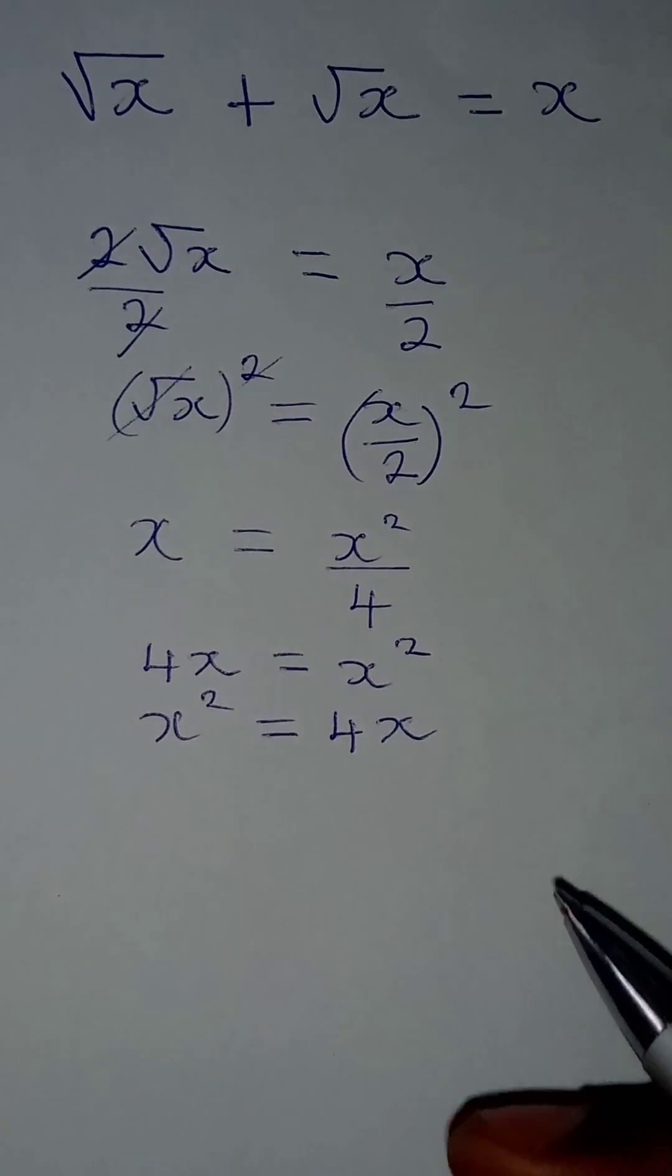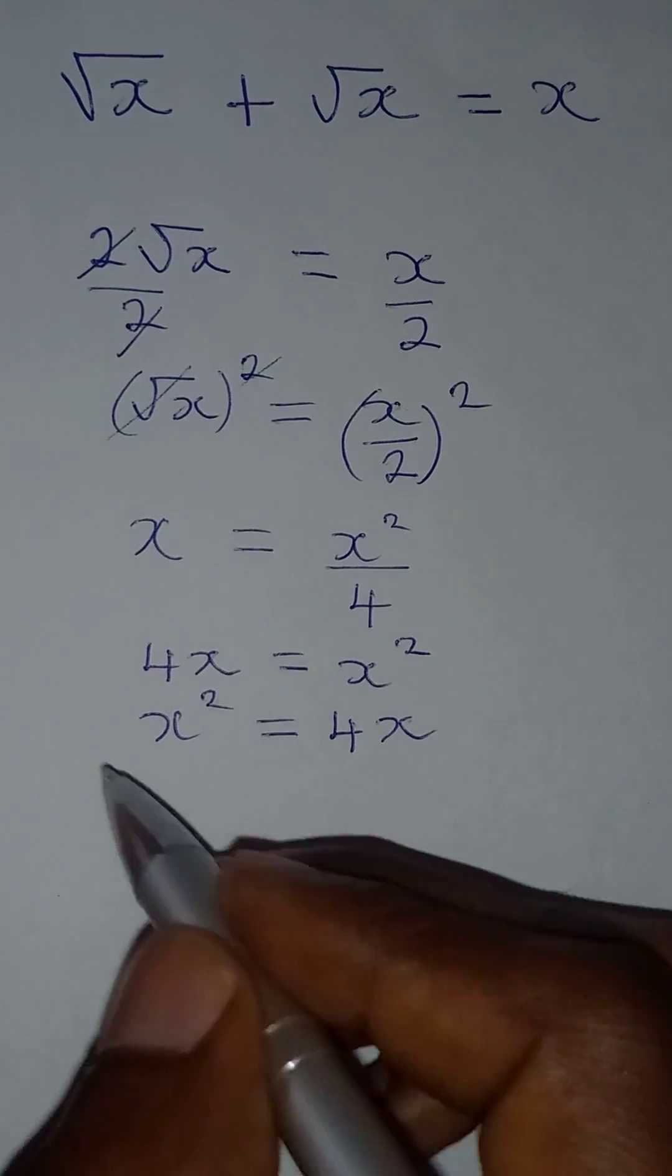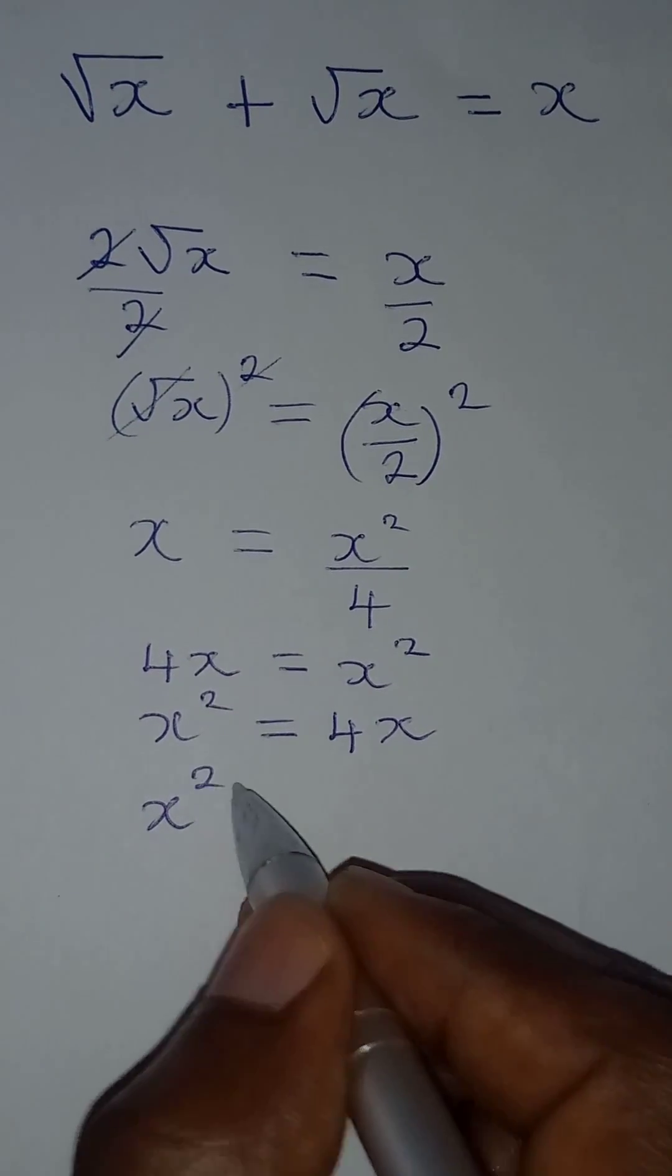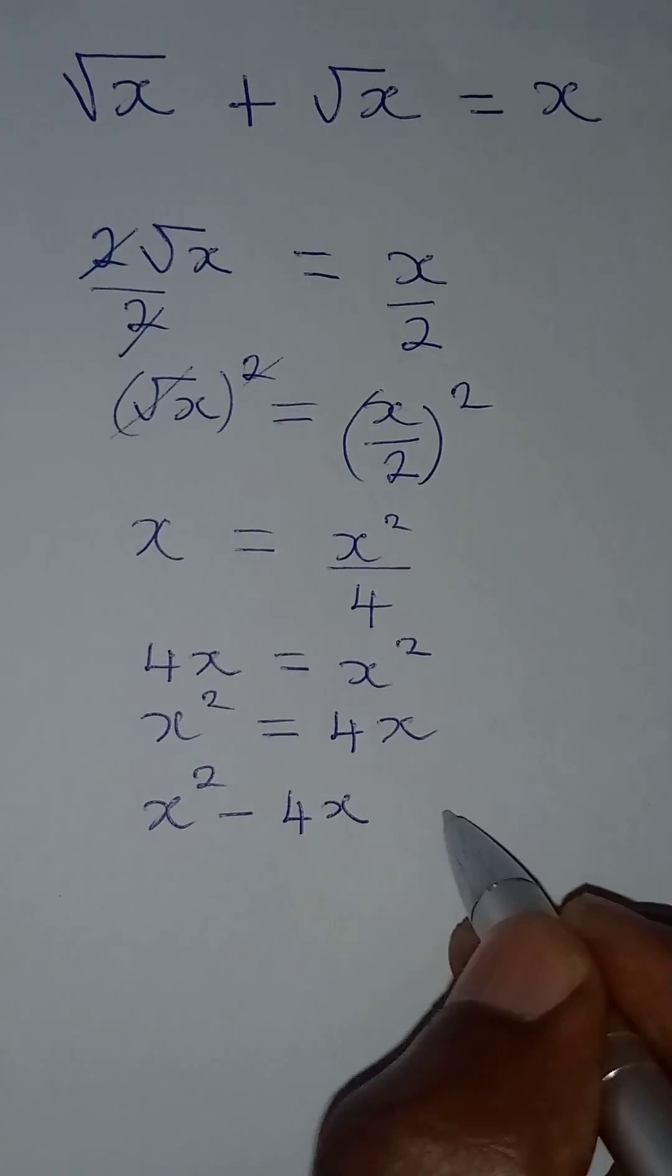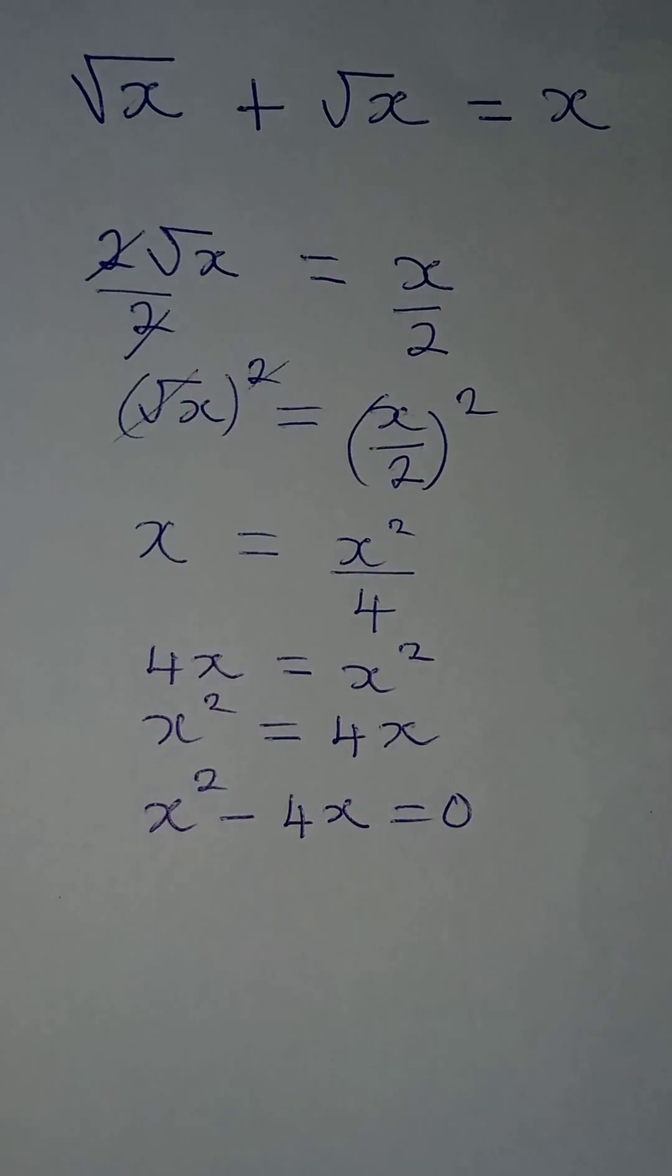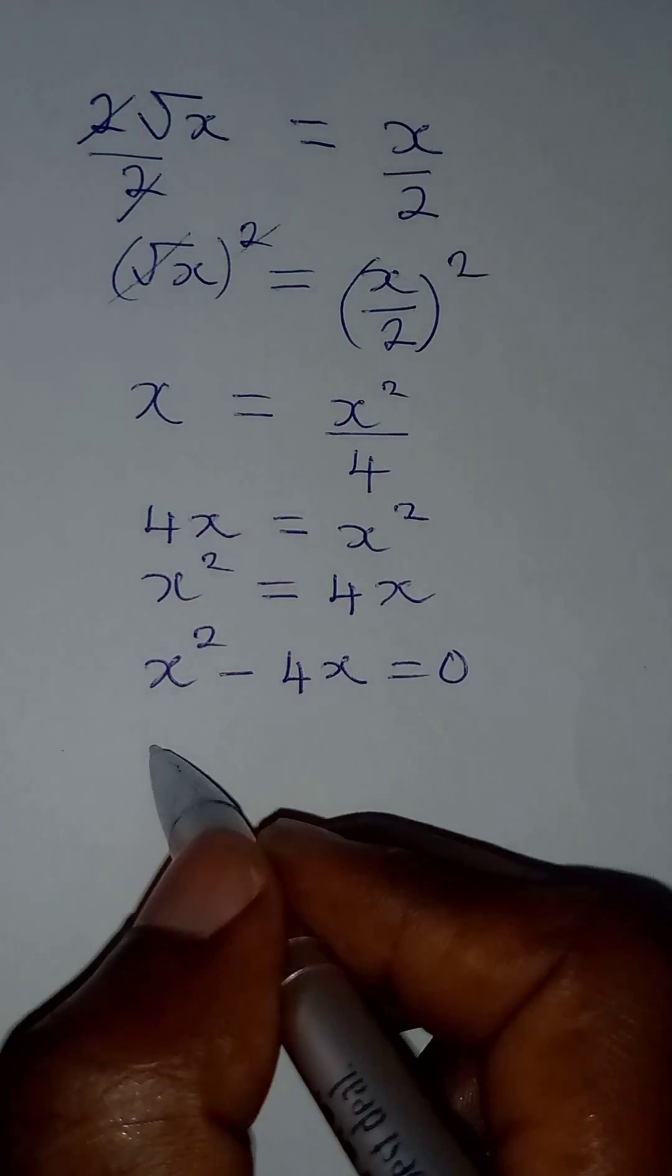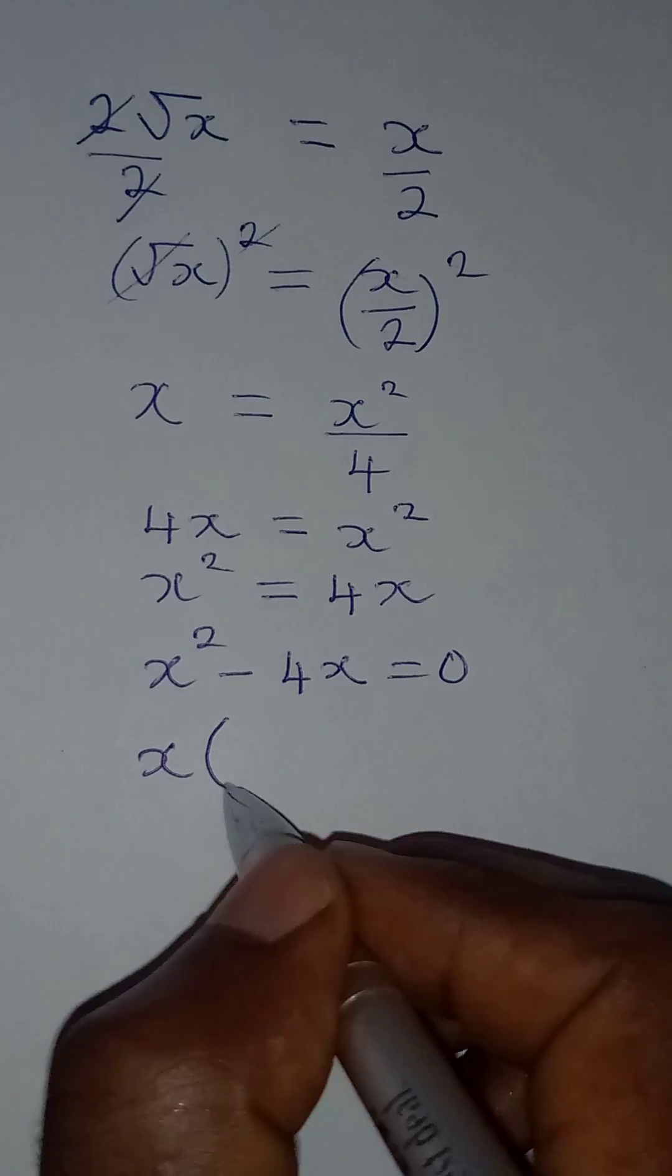So what do I do? I can collect like terms and bring 4x to the left. So I have x squared minus 4x equal to zero. Now we have a quadratic equation so that we can factorize.